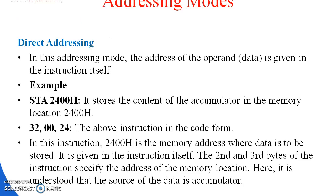Next, let's look at addressing modes. The different types of addressing modes are: first, Direct Addressing Mode. In this addressing mode, the address of the operand or data is derived from the instruction itself. For example, STA 2400H — which stores the content of the accumulator in memory location 2400H.